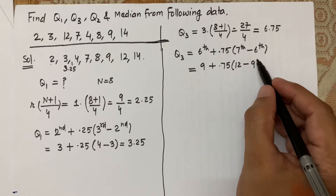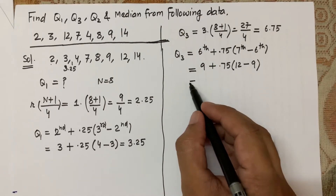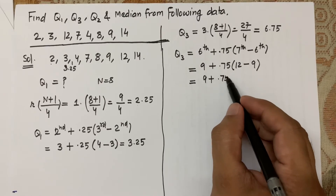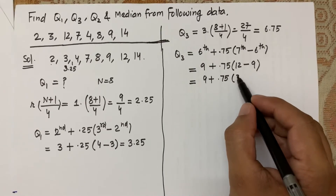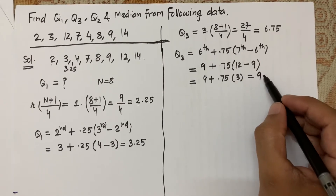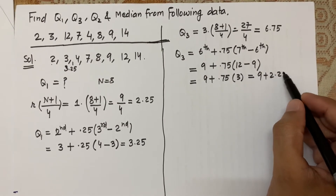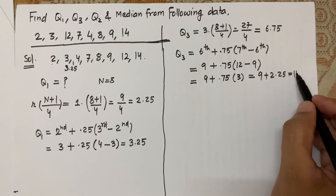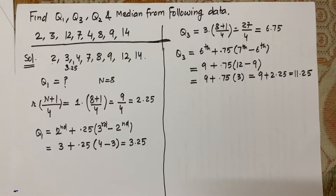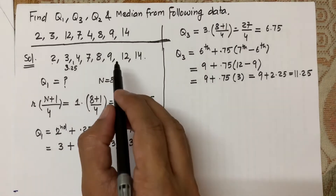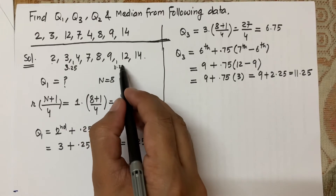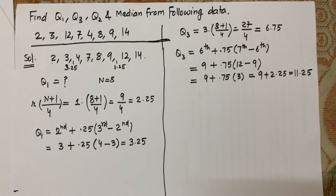Calculating Q3: 9 + 0.75 × (12 − 9) = 9 + 0.75 × 3 = 9 + 2.25 = 11.25. So 11.25 is the value of Q3, falling somewhere between 9 and 12 in the data set.